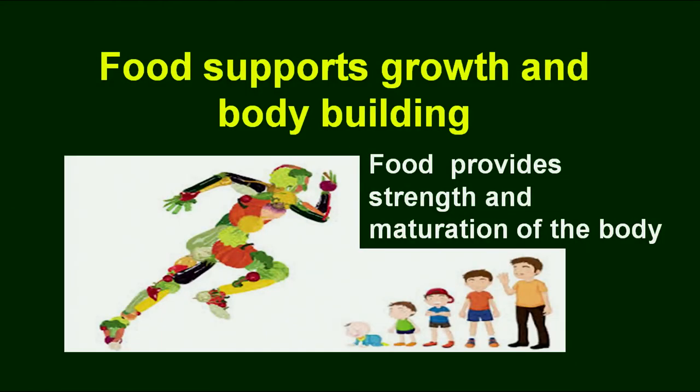Everybody wants to have a good body, but certain kinds of foods are specially required that will provide the strength and maturation of the body. In this picture, you can see how a child is going into adulthood and that at every stage, specific nutrients and specific foods are required. At every age, you require specific foods in terms of specific nutrients for growth and development.